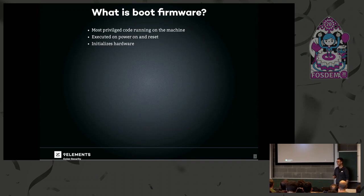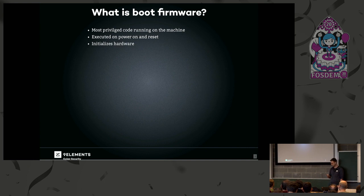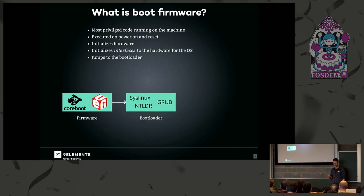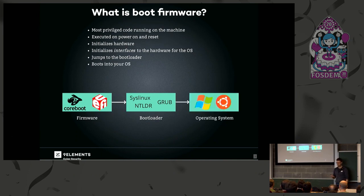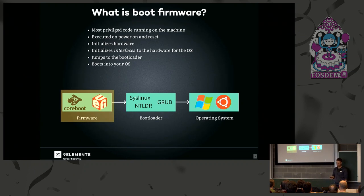So, what's boot firmware? You all might know it's the most privileged code running on your machine. When you press the power button, it does all the hardware initialization. For example, that's CoreBoot or UEFI, and it usually loads the bootloader from disk like GRUB, and then the bootloader loads your operating system. In this talk, I'm going to focus on the firmware part only, ignoring any later stages.